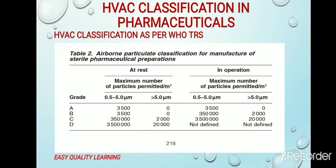This snapshot is taken from WHO TRS for sterile preparations. Here also, Classes A, B, C, and D are defined, with the number of particles at rest and in operation specified. These limits are more or less equivalent to Schedule M, with a little bit of differences.